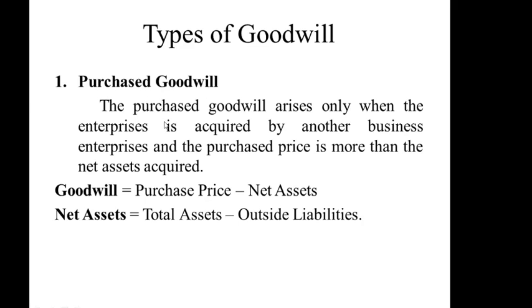There are two types of goodwill. Purchased goodwill arises when an enterprise is acquired by another business and the purchase price is more than the net assets acquired. It is the difference between the purchase consideration and the value of net assets. The formula is: Goodwill = Purchase Price − Net Assets, where Net Assets = Total Assets − Outside Liabilities.